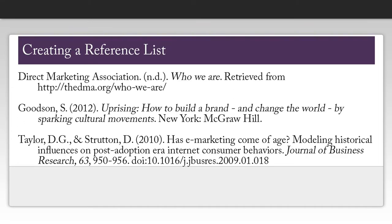Once you have all of your citations, you can create your reference list, which will go at the end of your paper. You want to make sure your references are in alphabetical order and that they each have a hanging indent, so that the first line of each citation is longer than the subsequent lines. Your reference list should also be double-spaced, and the top of your page should say References.